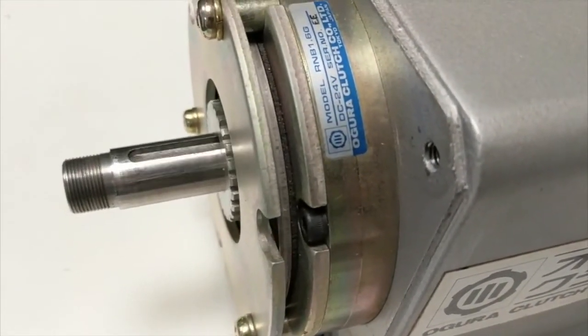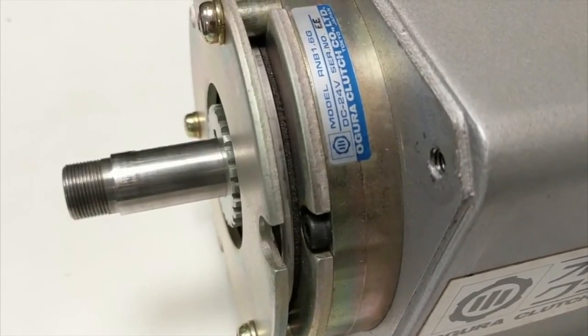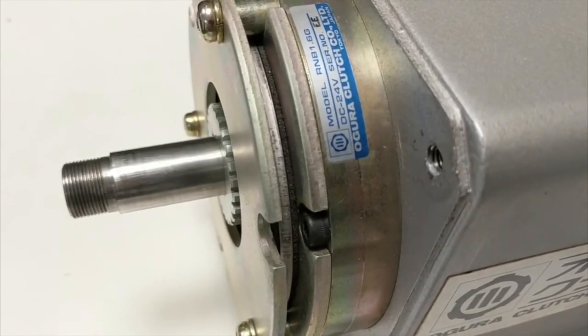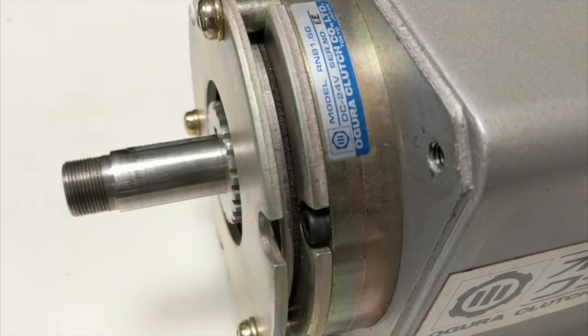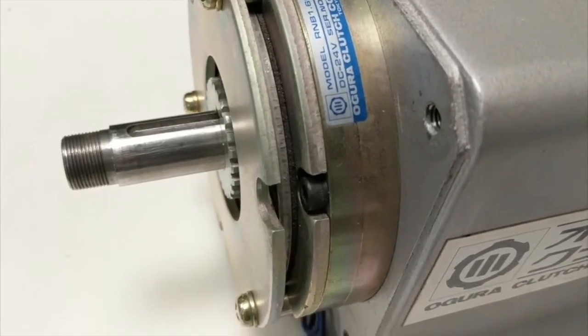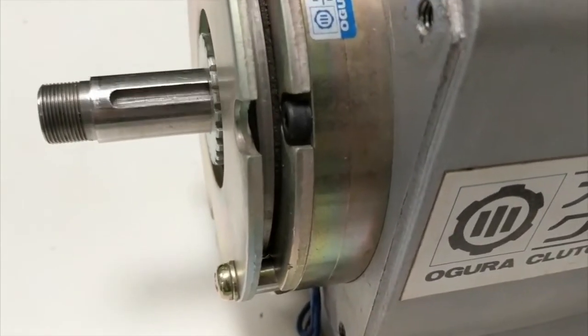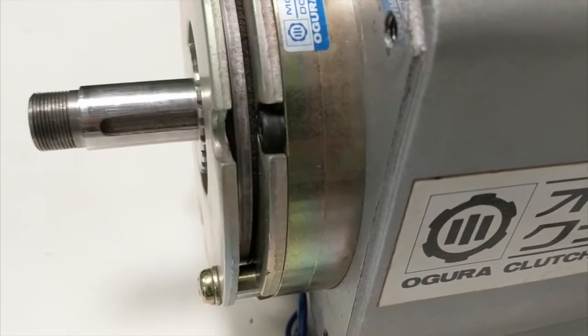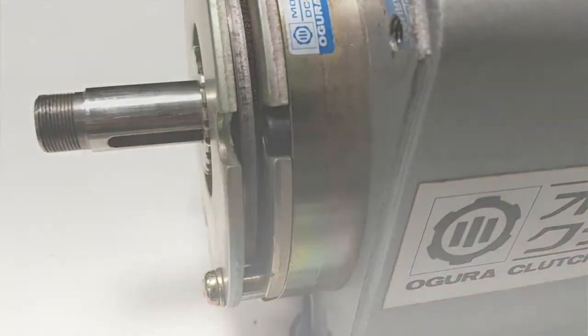When the brake is disengaged, there should be almost no noise. If noise is coming from rubbing, the hub or shaft may be misaligned. If the sound is more of a metallic sound, the hub may be contacting the pressure plate during rotation.